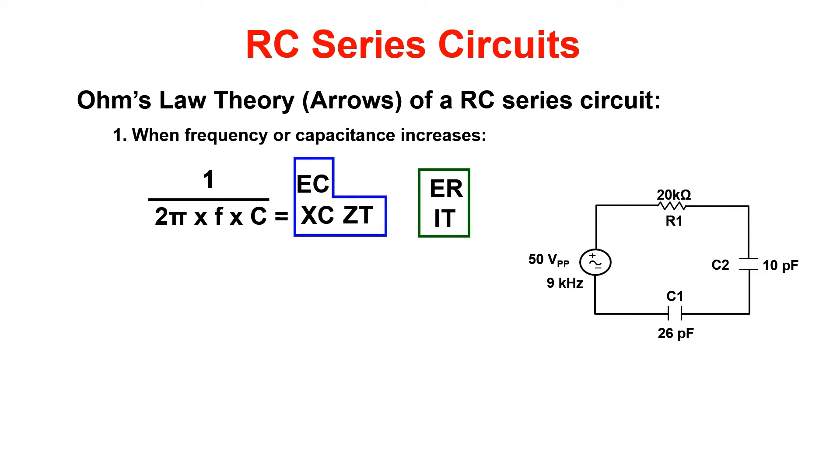When frequency or capacitance increases, EC, XC, and ZT are going to decrease. ER and IT will increase.